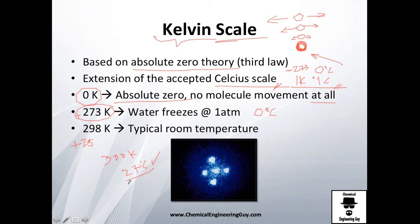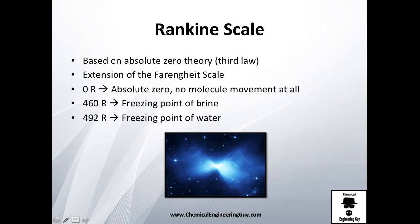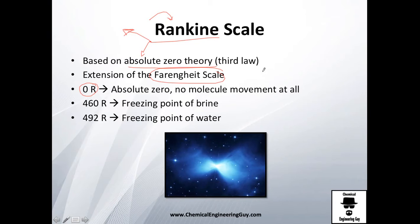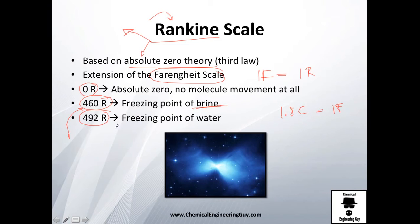Then came Rankine, which is the equivalent of Kelvin but in the English/imperial system. Using the same absolute zero theory, zero Rankine equals absolute zero. However, one degree Rankine equals one degree Fahrenheit — and since 1.8 Celsius equals one Fahrenheit, the numbers are much larger. For example, 460 Rankine is the freezing point of Fahrenheit's brine, and 492 Rankine is the freezing point of water.